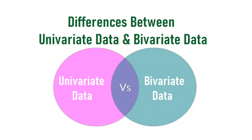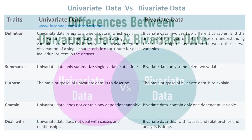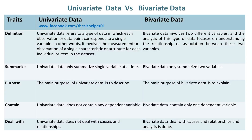Differences between Univariate Data and Bivariate Data. Univariate data refers to a type of data in which each observation or data point corresponds to a single variable.